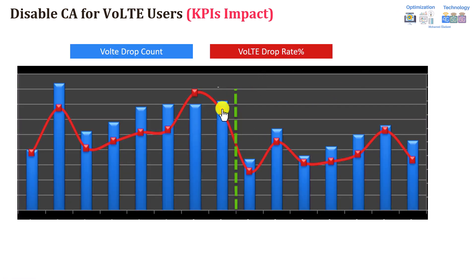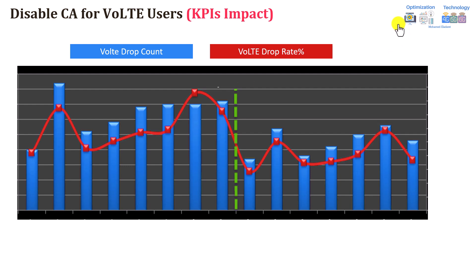This shows an impact from one of the networks. As you can see, there is a good improvement in VoLTE drop rate after carrier aggregation was disabled. You might not see this in all networks — it depends on the network situation, user location, and how many carrier aggregation layers are in the network. But in general, it is recommended to disable carrier aggregation for VoLTE users.